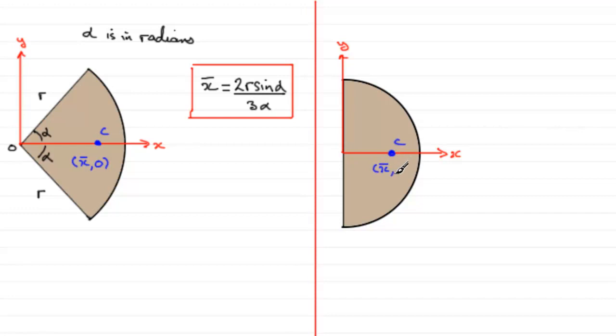Coordinates would be x-bar, 0, the radius would be r, and this would be our origin. So what would x-bar be?